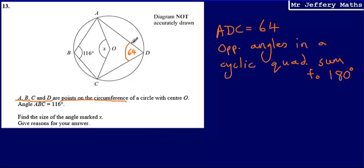Now that I've worked out this angle ADC, I can now work out what X is going to be. And again, I can use another circle theorem here. So I'm going to say that X is equal to 128 degrees.